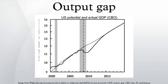However, if the balanced budget amendment were passed into law, it would result in a drastic reduction in government spending that would exacerbate the output gap.